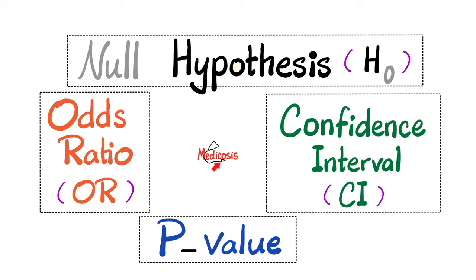We talked about the range, bimodal distributions, sensitivity versus specificity, positive and negative predictive values, positive and negative likelihood ratios, incidence versus prevalence, the different study designs such as case series, case control study, cross-sectional study, cohort study — both prospective and retrospective cohort — twin concordance studies, adoption studies, and ecological studies.